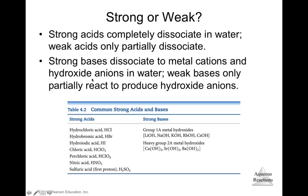Strong bases dissociate into metal cations and hydroxide ions in water, while weak bases only partially react to produce hydroxide ions. Sodium hydroxide is an example of a strong base. When added to water, it completely dissociates: sodium interacts with the oxygen side of water, while hydroxide interacts with the hydrogen side.